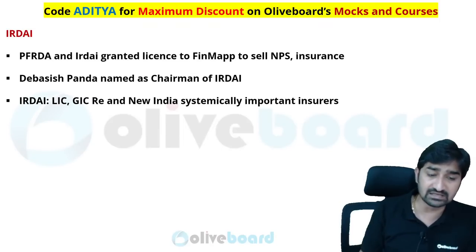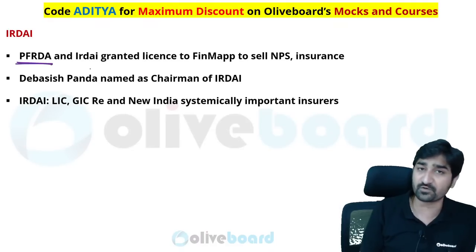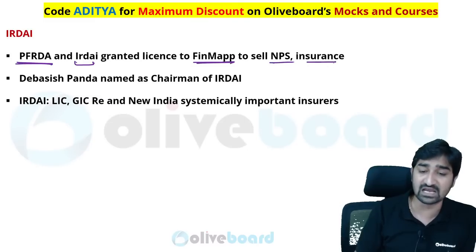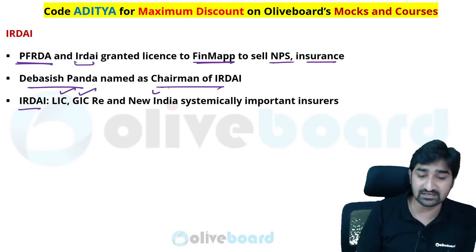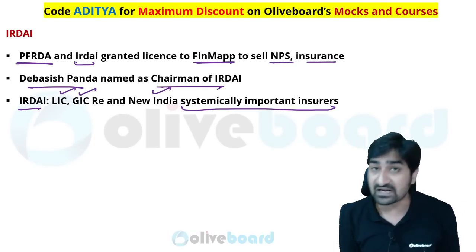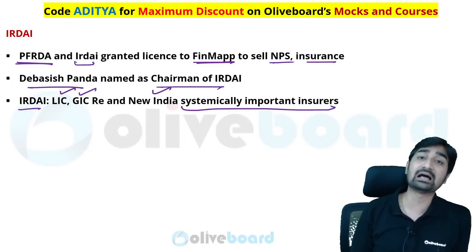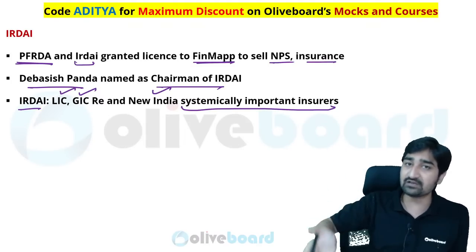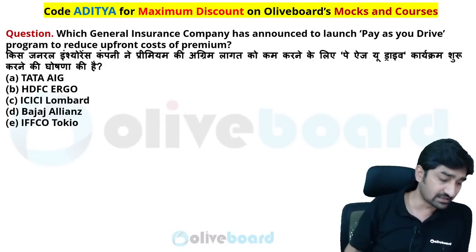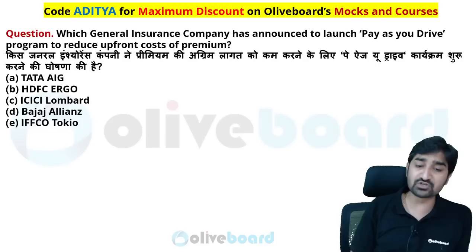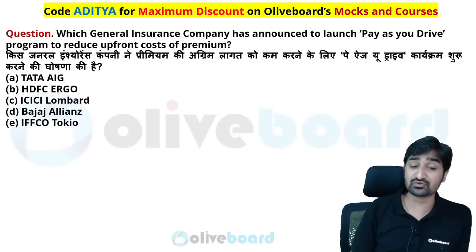IRDAI recently gave a license to Finmap to sell NPS and insurance plans. Devashish Pandasar, chairman of IRDAI, announced LIC, GIC, and New India Insurance as Systemically Important Insurers in India — similar to how SBI, HDFC, and ICICI banks are Systemically Important Banks in India. Which general insurance company launched a 'Pay As You Drive' program to reduce the upfront cost of premium?